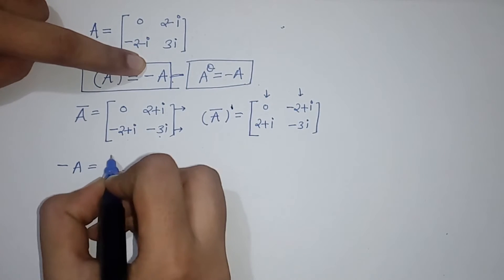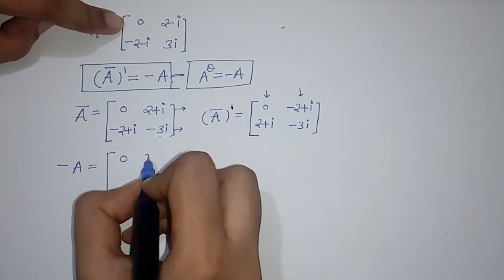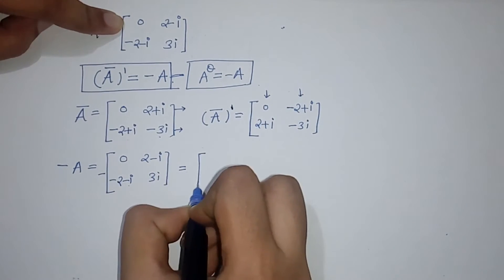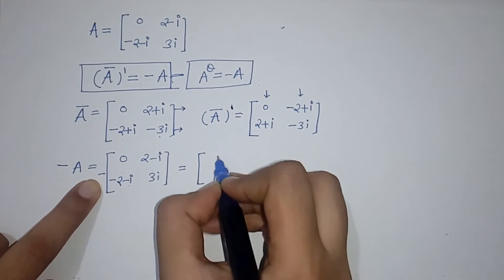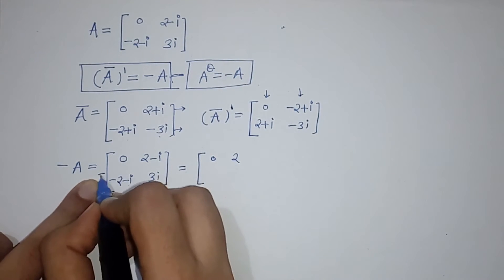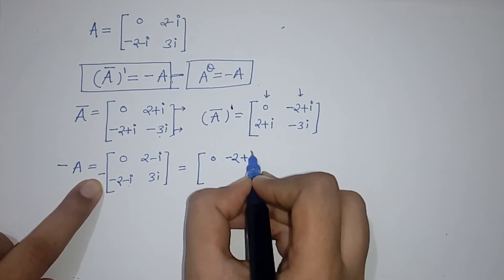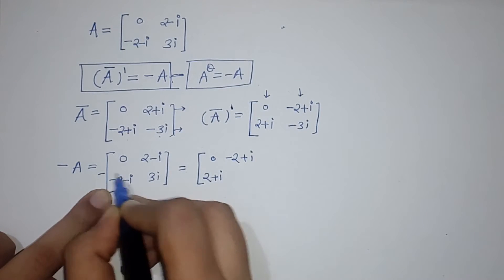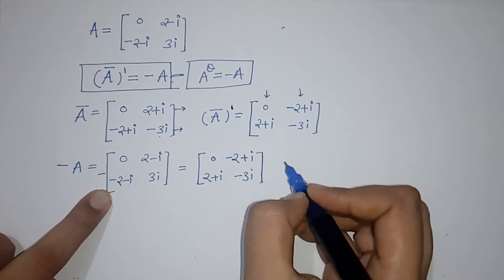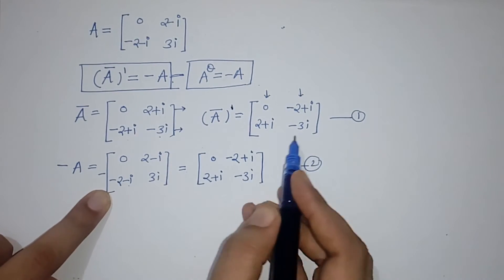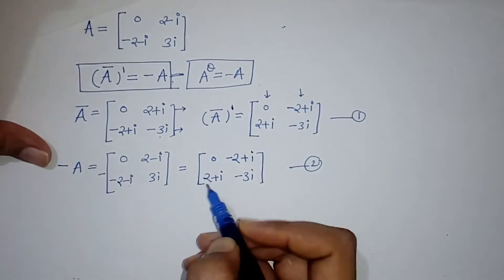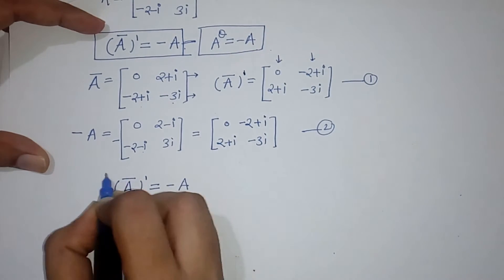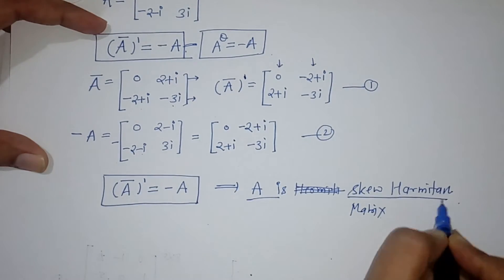Now we check whether A^θ equals minus A. The original matrix A has elements: 0; (2 minus i); (minus 2 minus i); and 3i. Taking minus A, we multiply each element by minus one: 0 stays 0; minus (2 minus i) gives (minus 2 plus i); minus (minus 2 minus i) gives (2 plus i); minus 3i gives minus 3i. Comparing A^θ with minus A element by element, they match. Therefore, A is a skew Hermitian matrix.